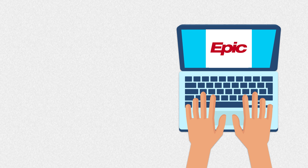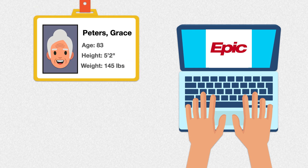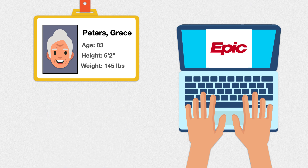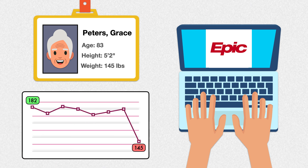Before you even lay eyes on the patient, you spend time in the electronic medical record learning as much as you can about her. You find that Ms. Peters is 5'2", with a current body weight of 145 pounds, leaving her with a body mass index of 26.5. You also find that she's been coming to your hospital system for the past 5 years, so her recent weight history is available to you. In 2016, her body weight was 182 pounds, and she remained relatively stable all the way up until 5 months ago when she was 179 pounds.